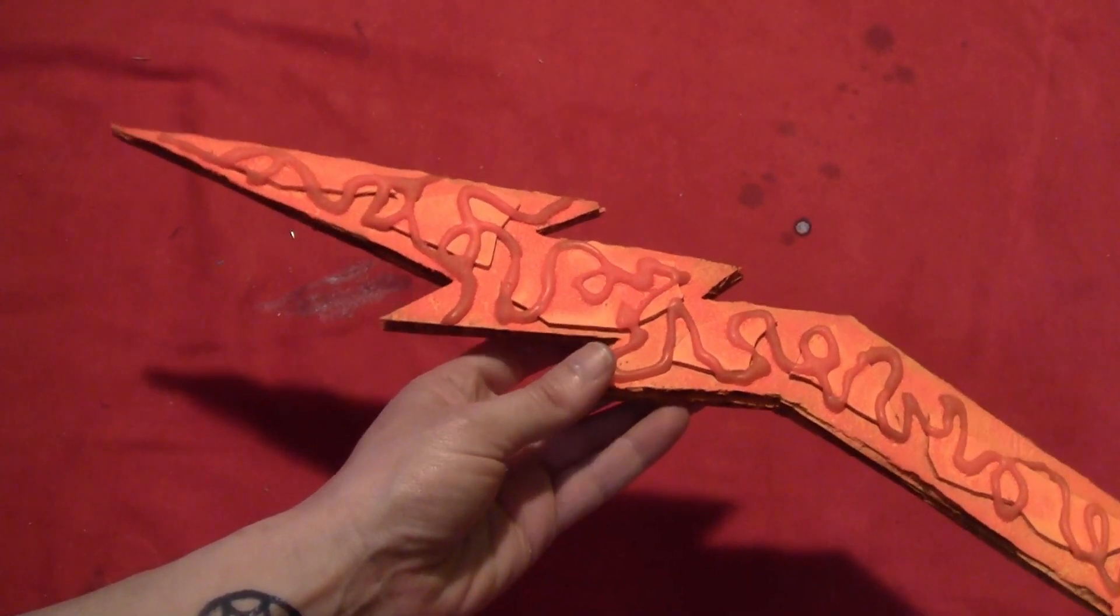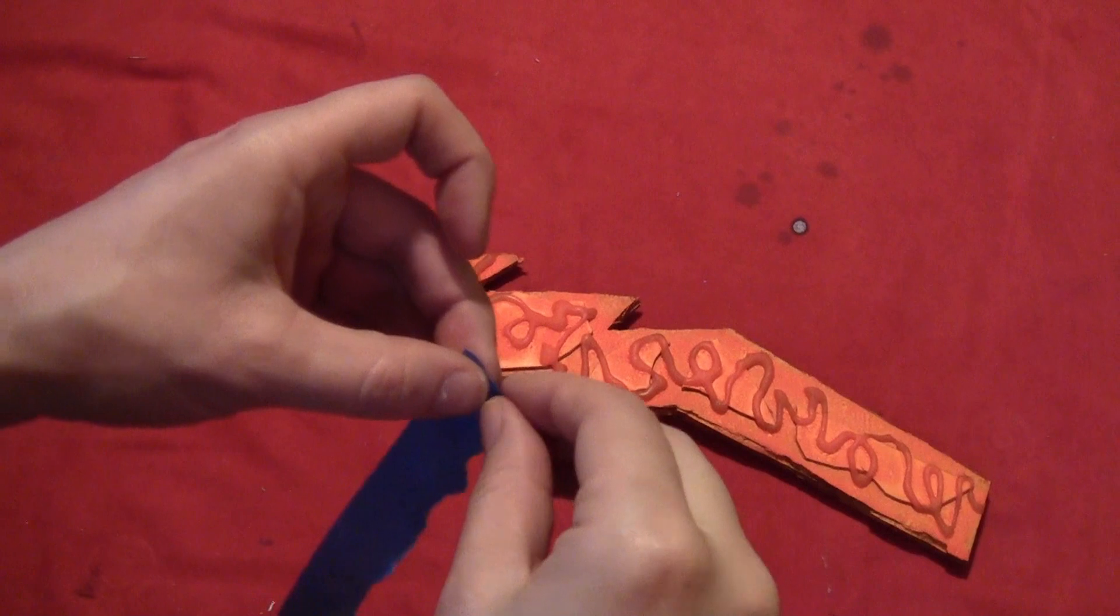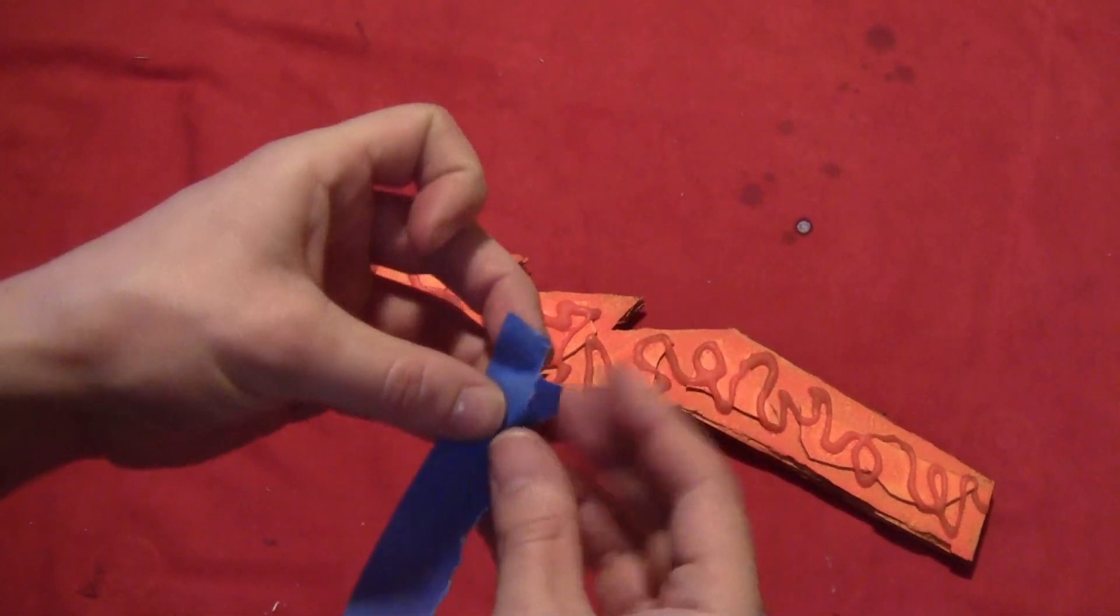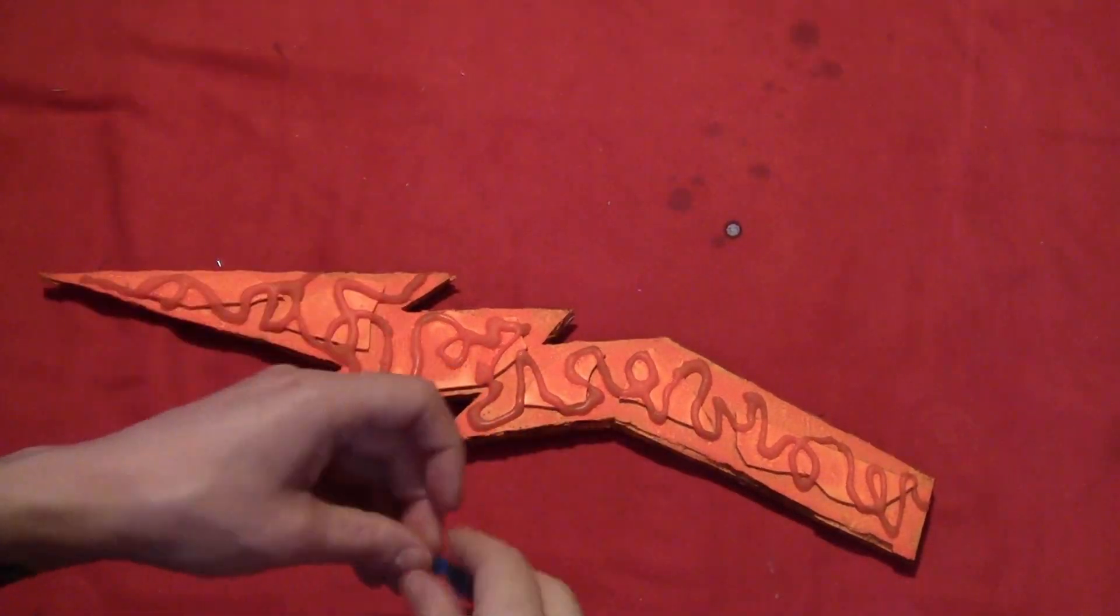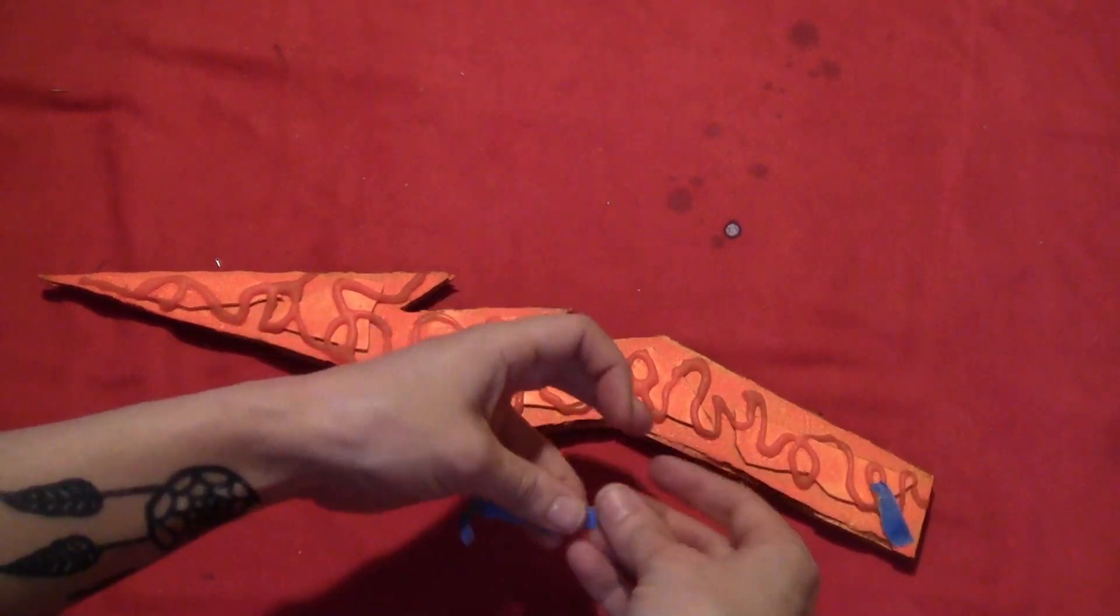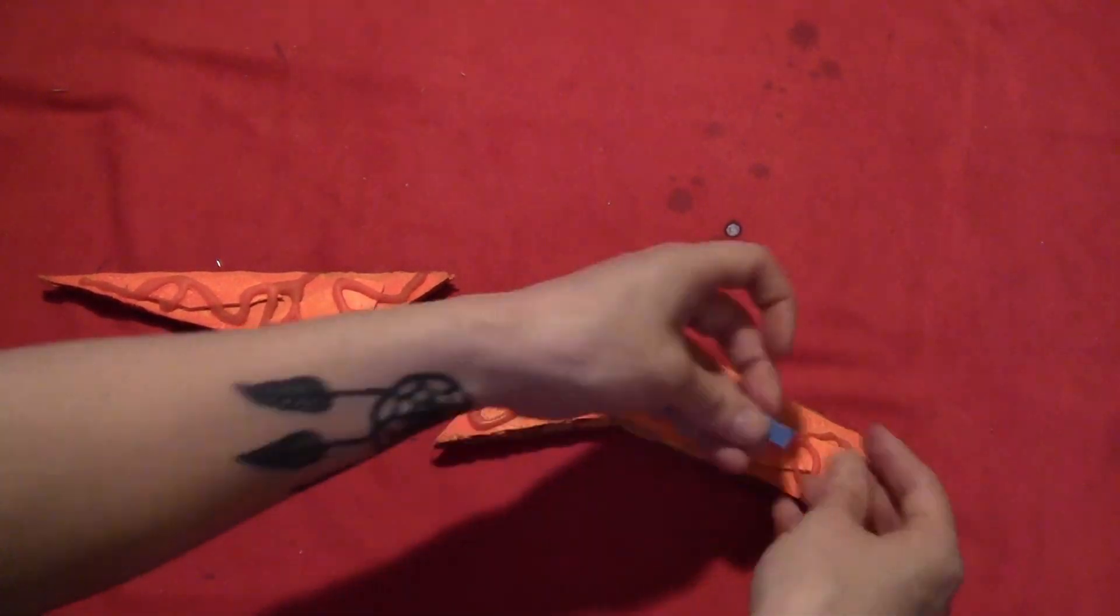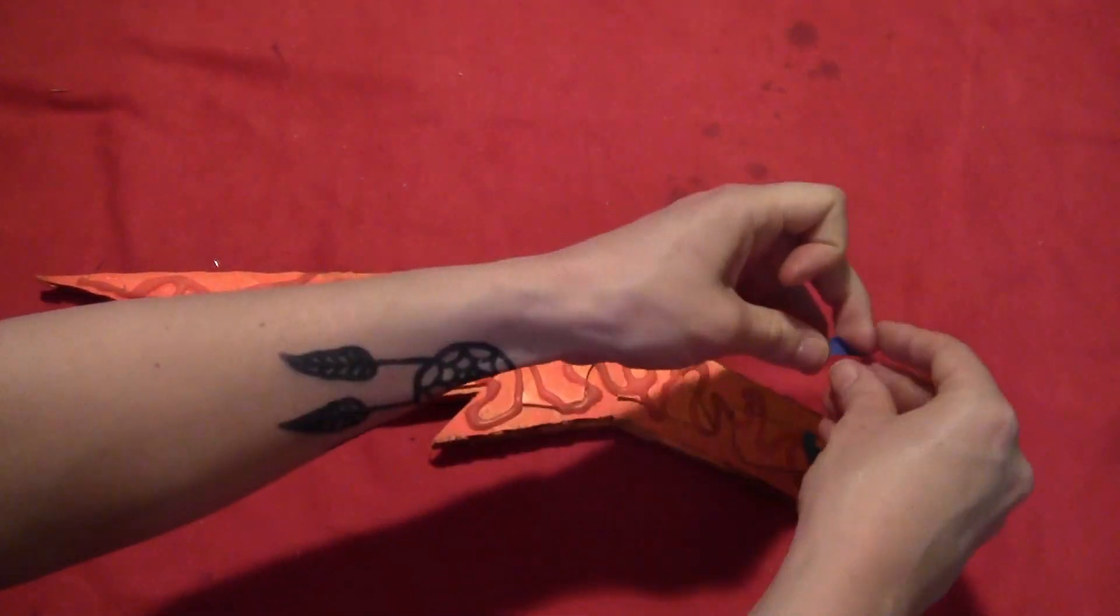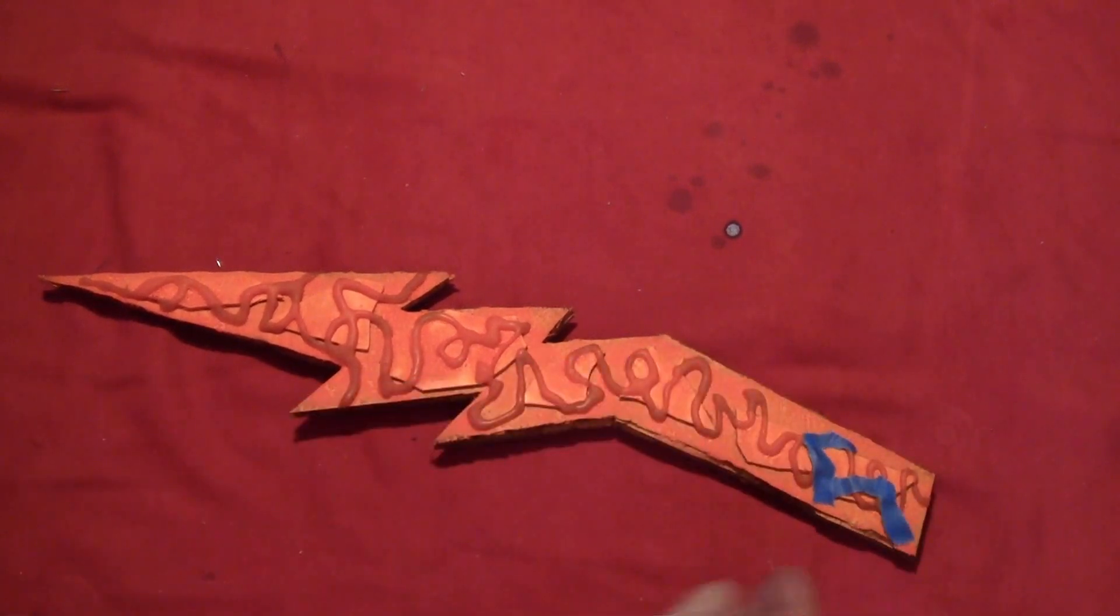So here it is once it's all dry. Then I just took some pieces of painter's tape and ripped them into jagged strips. And then I just stuck those all over the dagger, making kind of the lightning bolt pattern down the blade.